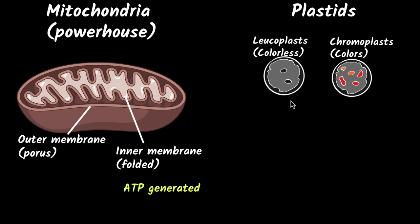Leukoplasts are mainly used for storage - storage of fats, proteins, lipids, basically storage of nutrients.